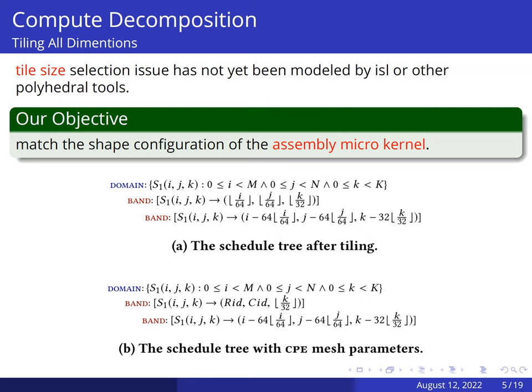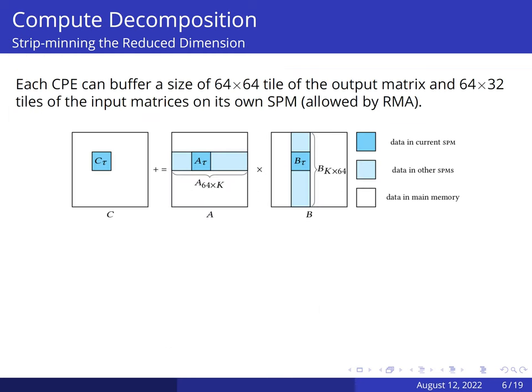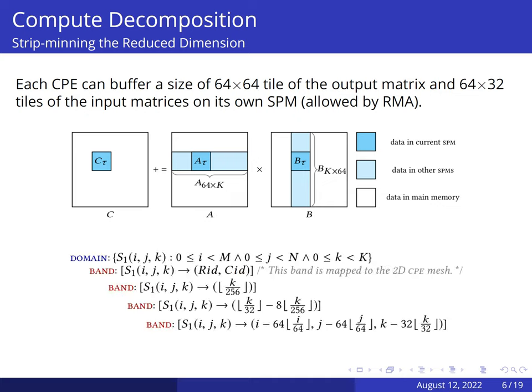However, the microkernel only computes the partial result. The picture below shows the distribution of matrix elements on the memory hierarchy of one cluster. A possible solution is to promote all the data needed to compute the accumulation of all products along the reduced dimension. Fortunately, the processor allows for remote memory access of data between computing processing elements. We leverage the row and column broadcast mechanism to share the data. So, each compute processing element can still buffer a small size of input matrices on its own memory. We strip-mine the reduced dimension to enforce the sequential communication of matrices along the horizontal and vertical direction. The result schedule tree is shown below.